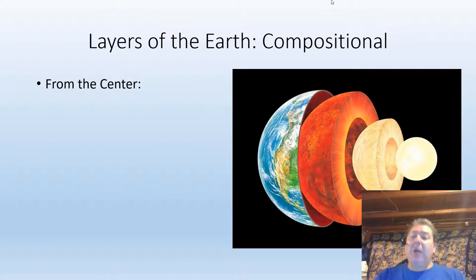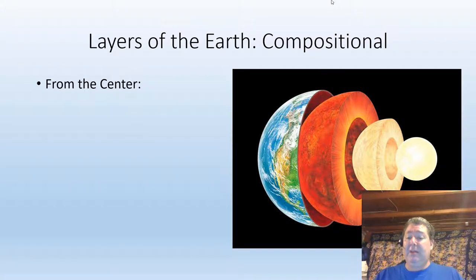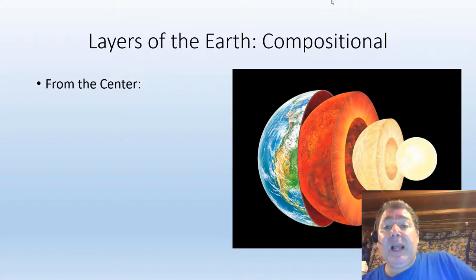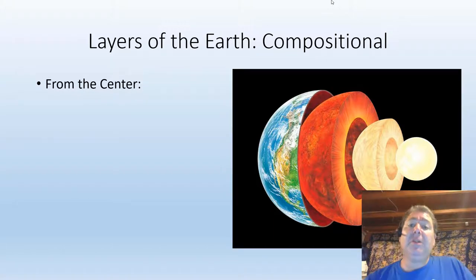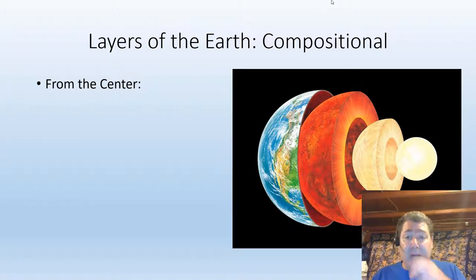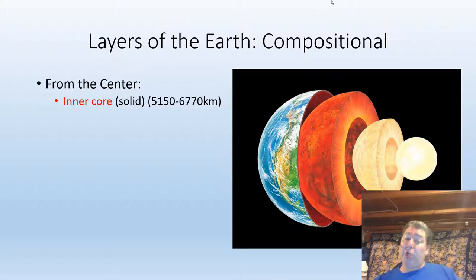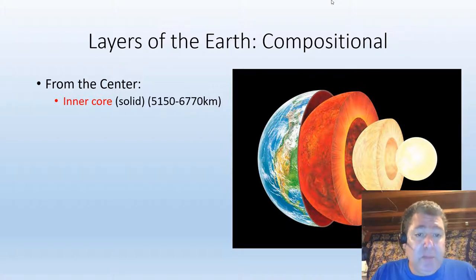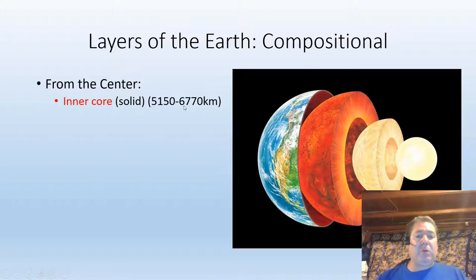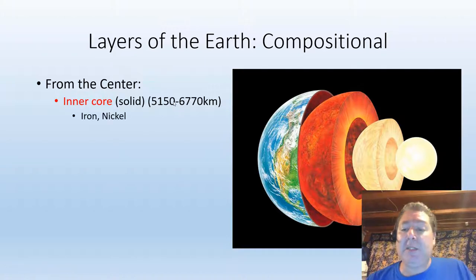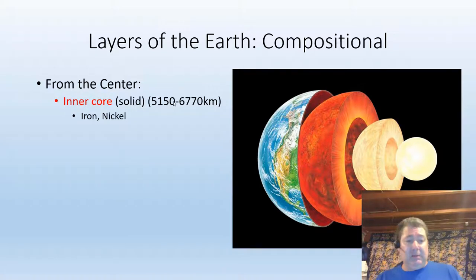Now let's take a quick look at our planet itself. There are two different ways we can look at our planet. The first is compositional — what is it composed of, the chemistry of our planet. From this perspective, there is the inner core, which is solid and made of iron and nickel. You don't really need to know the exact distances, just know the relative thickness and the order they're in.